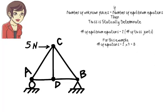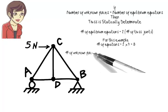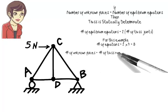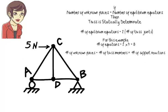Why two times the number of joints? I am going to answer this question in a minute. For now, let's just accept it as a fact. The total number of unknown forces in a truss equals the number of its members plus the number of its support reactions.